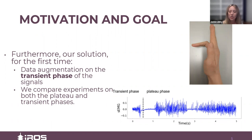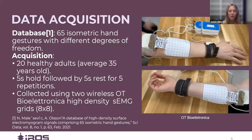Gesture classification on the transient phase allows for a neuroprosthetic system to predict the user's intended gesture even before it happens. This can allow for systems to react faster, improving the agility of the system.